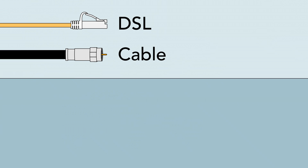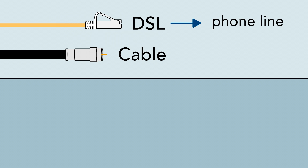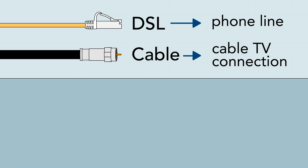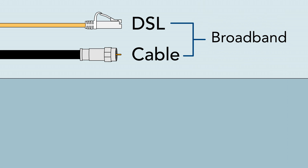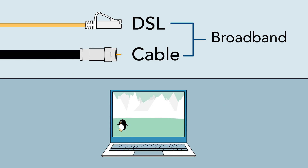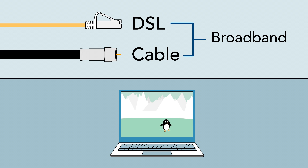Generally, DSL and cable are better options. DSL plugs into your phone line, and cable uses your cable TV connection. These are both known as broadband internet connections, because they offer much faster speeds than dial-up. This makes it easier to watch videos, play games, or browse the web.